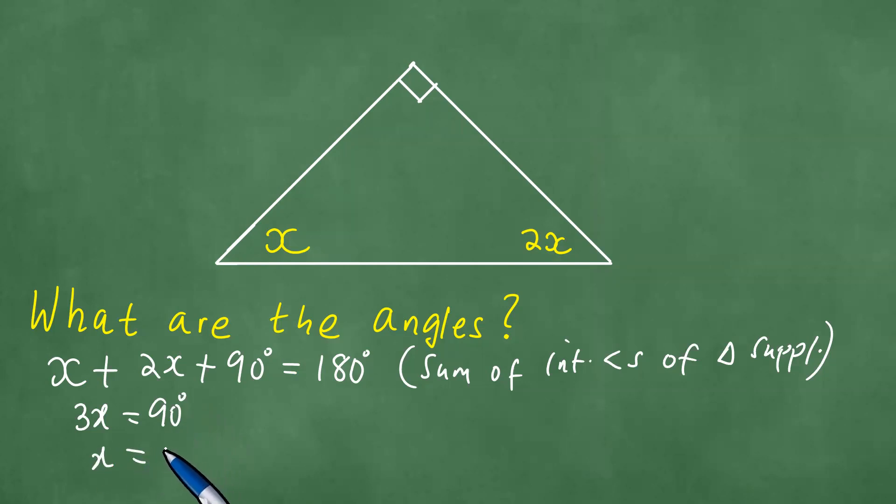Dividing both left and right by 3 gives us exactly 30 degrees. That means our x equals 30 degrees and our 2x equals 2 times 30 degrees, which is exactly 60 degrees.